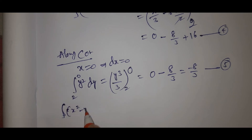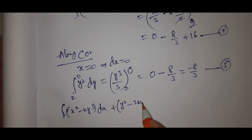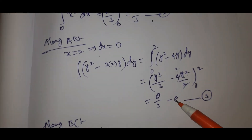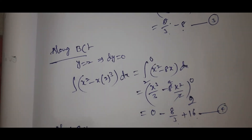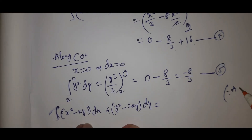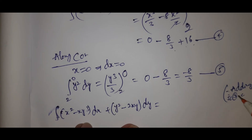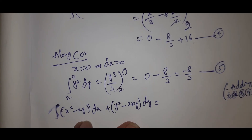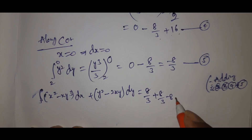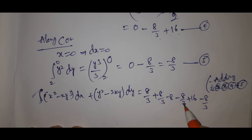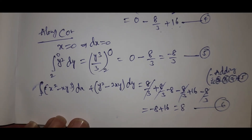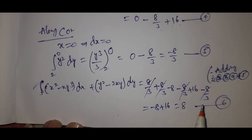Adding all parts: the line integral equals (8/3) along OA, plus (8/3 minus 8) along AB, plus (minus 8/3 plus 16) along BC, plus (minus 8/3) along CO. Combining: 8/3 plus 8/3 minus 8/3 minus 8/3 cancels to zero, and minus 8 plus 16 equals 8. So LHS equals 8. Since LHS equals RHS equals 8, Green's Theorem is verified. This is equation number 6.